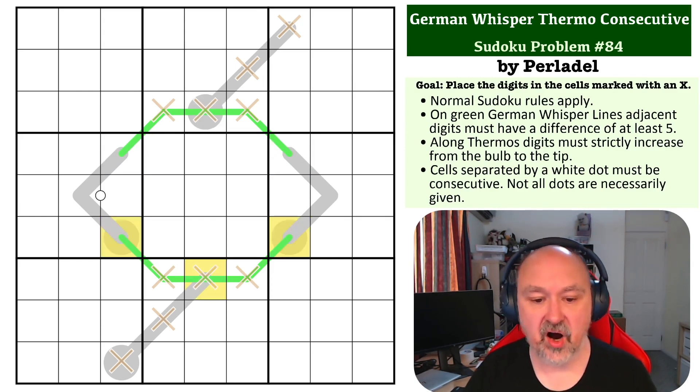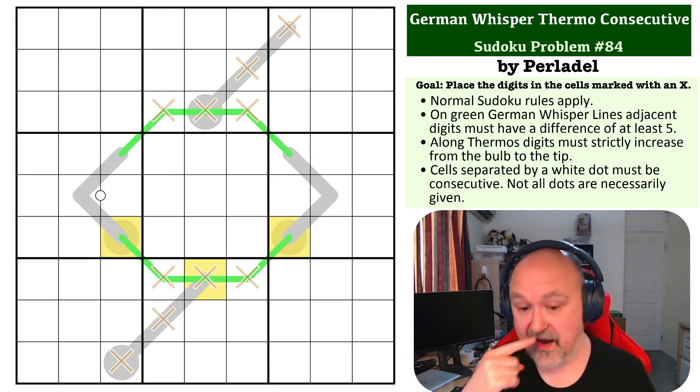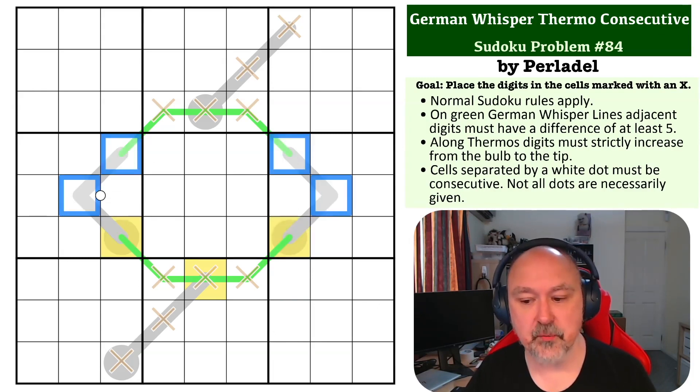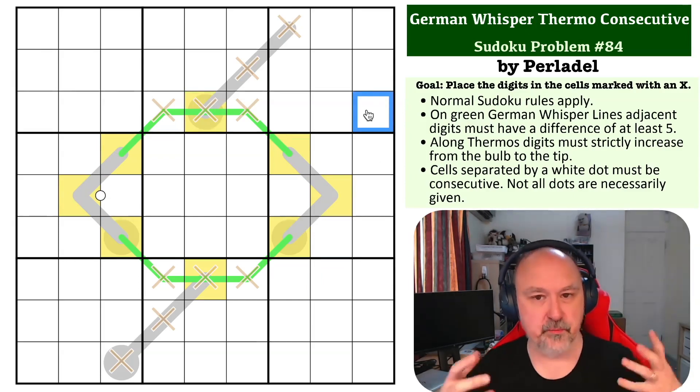If those digits there are high, is that going to cause a problem? Because these all must be the same. The reason you can ask this question is because these are at the bottom of a thermo. If these become high, everything along this thermo must also be high, because you must go up from the bulb of a thermo.